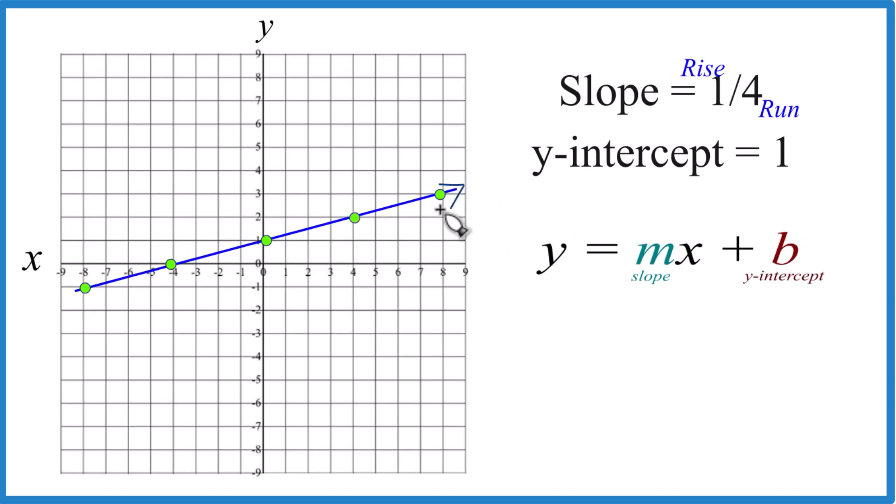Then we'll put arrows to show this goes to infinity. And this is the graph of the line we get when we have a slope of one-fourth and a y-intercept of one.